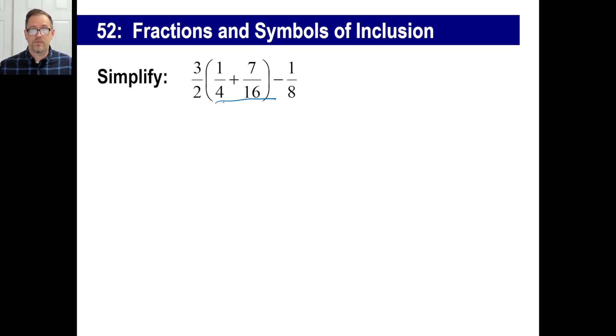This part in parentheses is what we need to do first, right? So we could, if I were you, I'd go like this. Three halves and then boom, like that. Let's just figure this out ourselves. The common denominator is 16, of course. One-fourth, 16 will be four-sixteenths, right? So four-sixteenths plus seven-sixteenths is eleven-sixteenths, right?